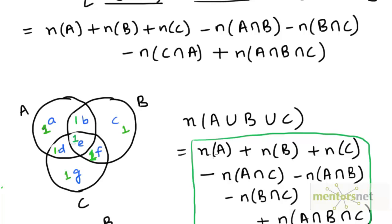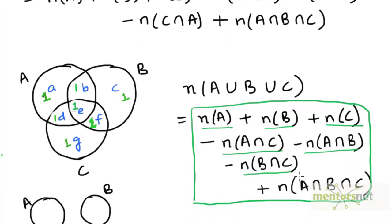We can rearrange the terms: N(A∪B∪C) = N(A) + N(B) + N(C) − N(A∩B) − N(B∩C) − N(C∩A) + N(A∩B∩C). We derived the same formula just by looking at the Venn diagram, ensuring we start with a basic skeleton and bring down the counts of all regions to exactly one, so each region is counted exactly once in the resulting formula.